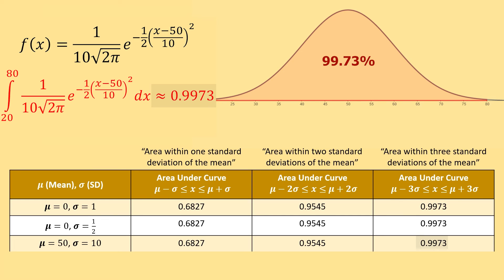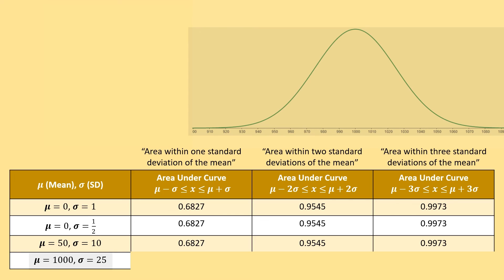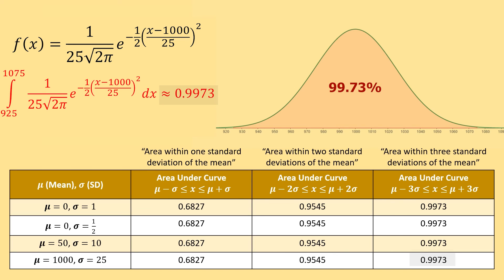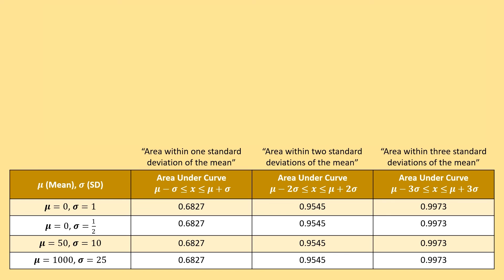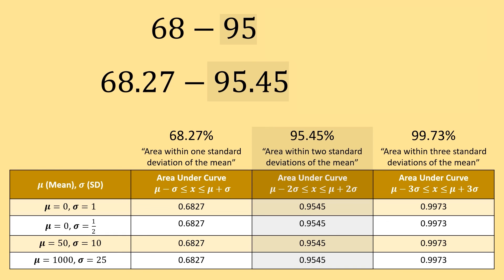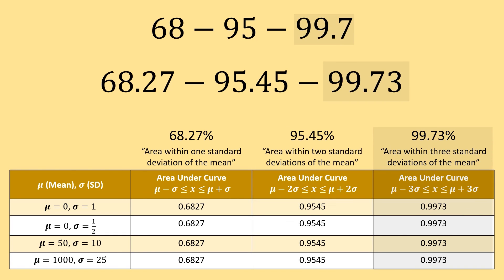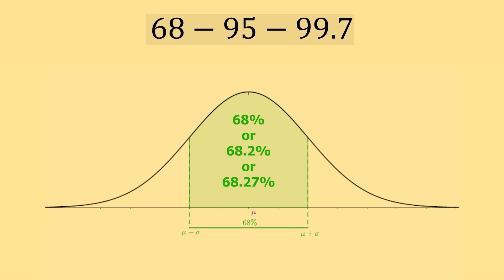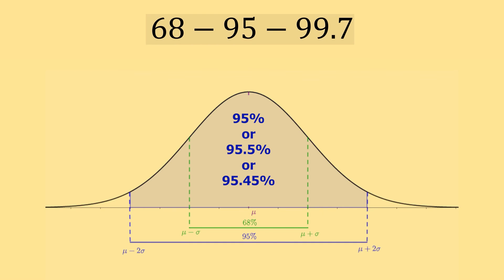You've probably caught the pattern by now. Even with mean equal to 1000 and standard deviation equal to 25, the area within each standard deviation will be exactly the same. In all four examples, the area within one standard deviation of the mean is 68.27%, within two standard deviations is 95.45%, and within three standard deviations is 99.73%. The 68-95-99.7 rule saves you from having to calculate these integrals over and over whenever the mean and standard deviation change — you can use this rule to jump to what percent lives within each interval.